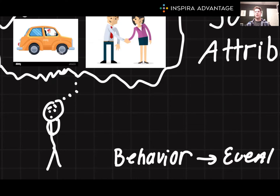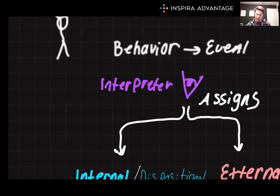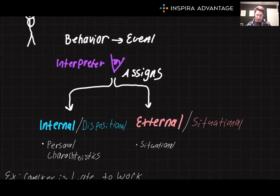At its core, this theory distinguishes between two types of attributions: internal, which are about a person's characteristics, and external, which focus on external factors.